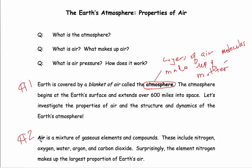Air is a mixture of gaseous elements and compounds. These include nitrogen, oxygen, water, argon, and carbon dioxide. Also includes greenhouse gases. Surprisingly, the element nitrogen makes up the largest proportion of Earth's air, and we're going to look at a graph in just a second.